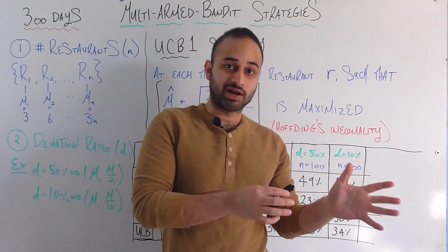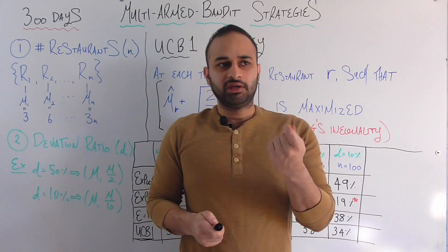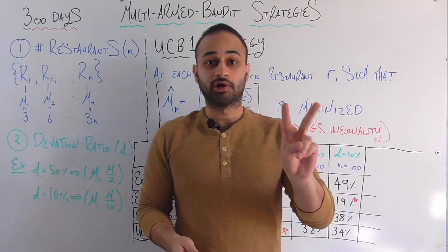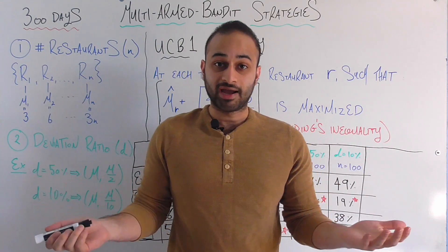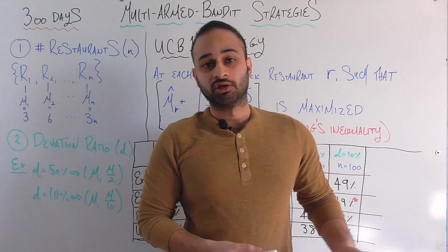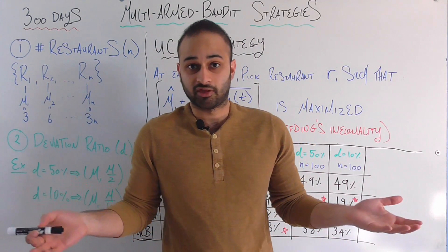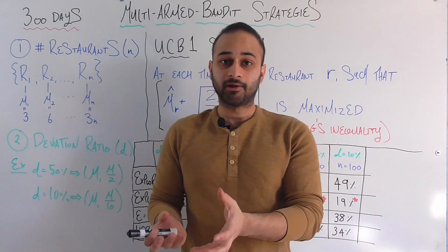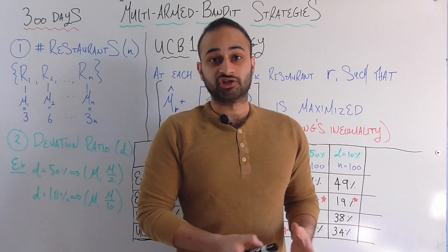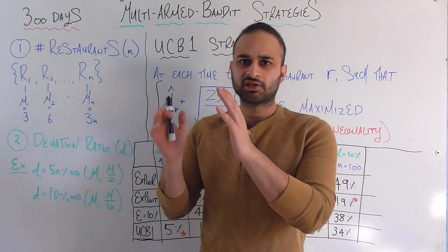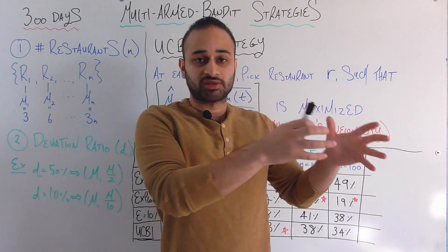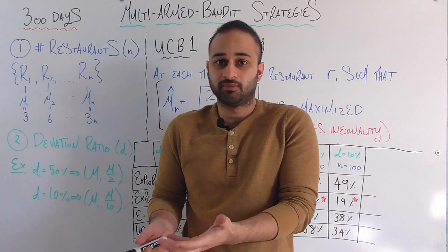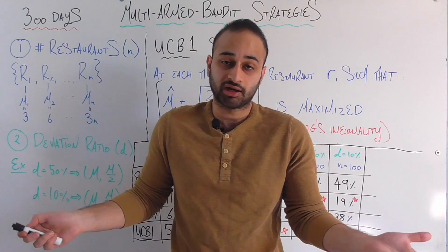This is a good strategy, but it misses one key point: the mean of each restaurant so far might be based on a very different number of samples. For example, say there are two restaurants — one has given you a mean happiness of 2.9 and the other a mean of 3. Epsilon Greedy would just go with the mean-3 restaurant. But what if the 2.9-mean restaurant you've only visited once, while the mean-3 restaurant you've visited 100 times? You're basing that 2.9 estimate on one visit, so it probably isn't the real mean. It might make sense to visit that first restaurant a couple more times to verify.